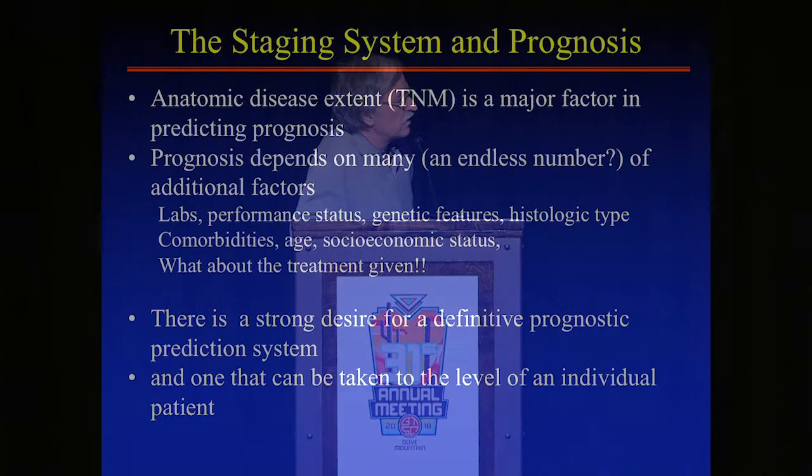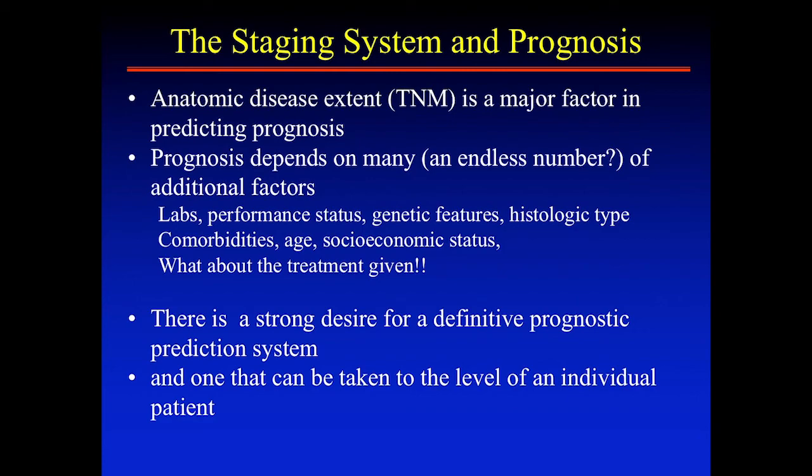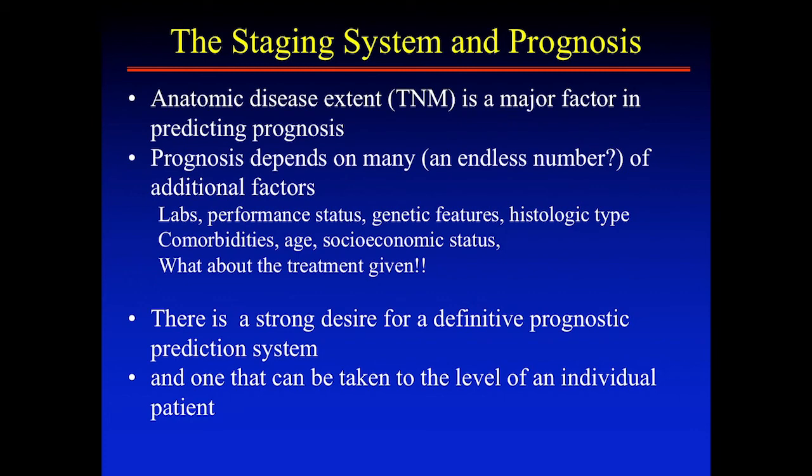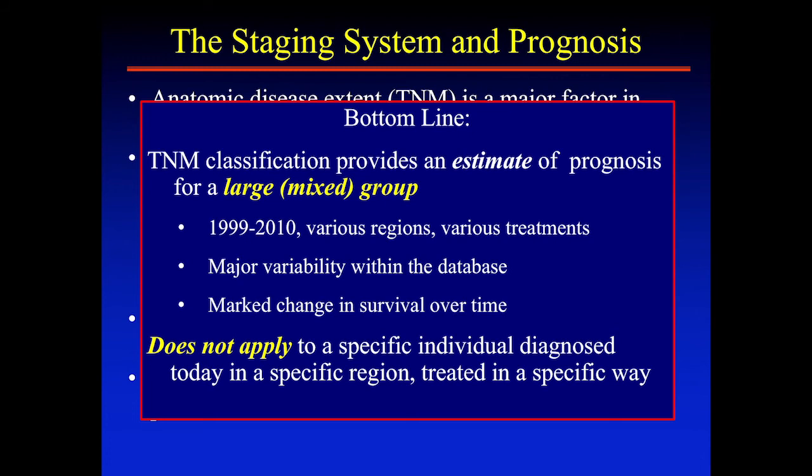Regarding prognosis: a lot of people look to the stage classification system as a method to predict prognosis, and I think you have to take that with a large grain of salt. Certainly anatomic extent of disease has a major impact on a patient's prognosis, but there are a lot of other factors that make a difference.